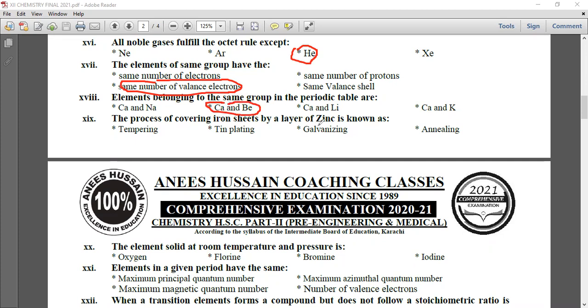The process of covering iron sheets by a layer of zinc is known as galvanizing. The element solid at room temperature and pressure is iodine. Elements in a given period have the same principal quantum number. When the number of shells is constant, it means their principal quantum number is the same.